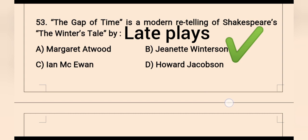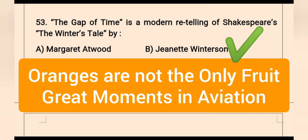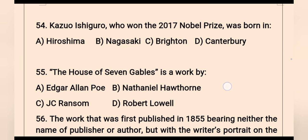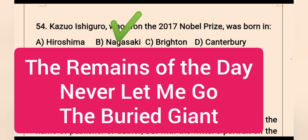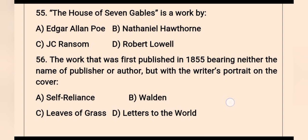Question 54: Kazuo Ishiguro, who won the 2017 Nobel Prize, was born in — the right option is Nagasaki. Kazuo Ishiguro, who won the 2017 Nobel Prize, was born in Nagasaki. He is a British novelist whose famous books include The Remains of the Day, Never Let Me Go, and The Buried Giant.